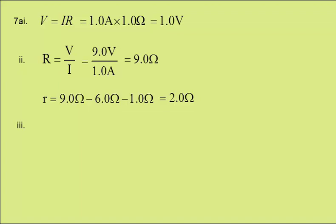In part 3, we need to find the total energy transformed by the battery in 5 minutes. Well, work done, or energy transferred, is current times time times potential difference. We have 1 amp for 5 times 60 seconds times the potential difference of 9 volts, which is 2700 joules.